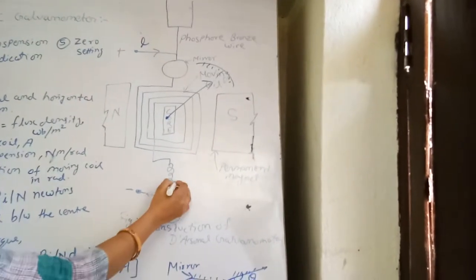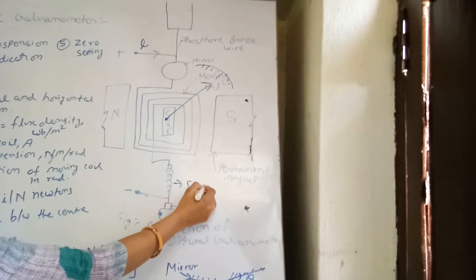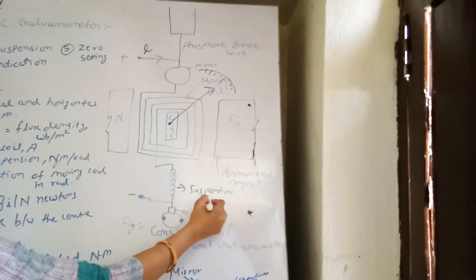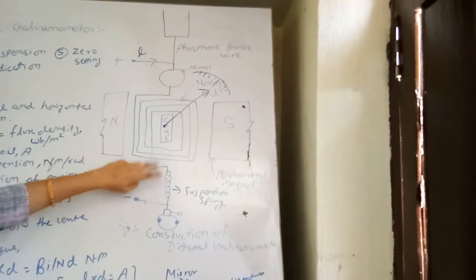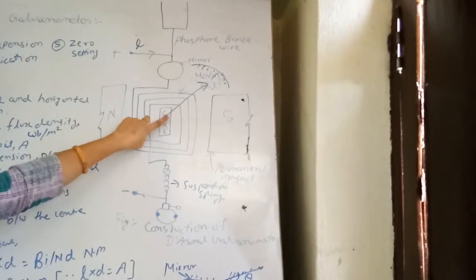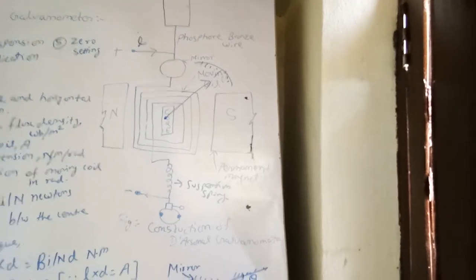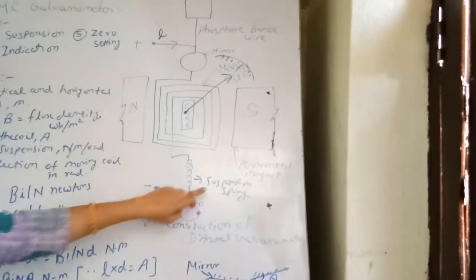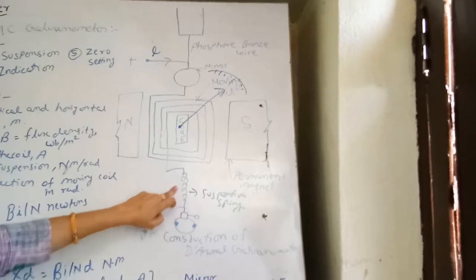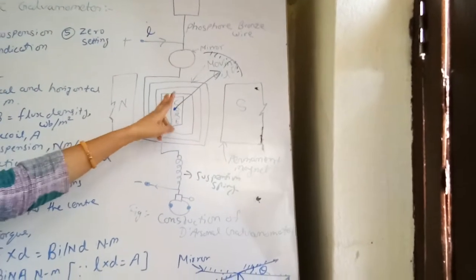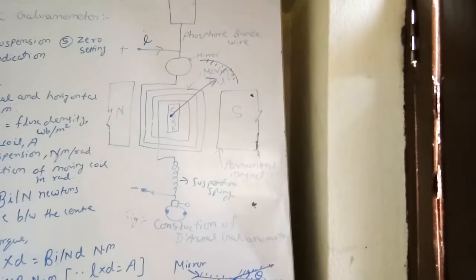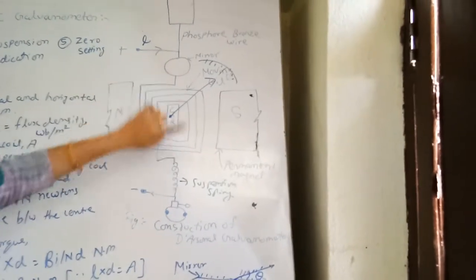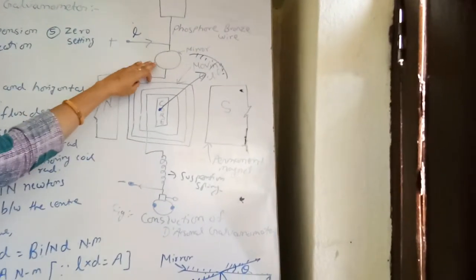With respect to the current, theta is calibrated in terms of current. Here is a spring — it is the suspension. A spring is provided because a controlling torque is needed to control the needle to the null position. If this suspension is not provided, then the needle will move throughout and always be moving.